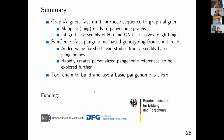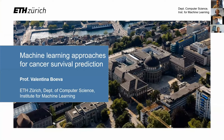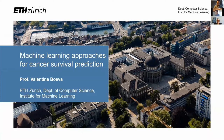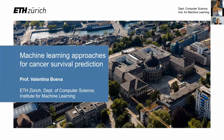The next speaker is Valentina Boeva from ETH Zurich, who will talk about machine learning approaches for cancer survival prediction. She notes her topic is more transcriptomics than pangenomics — comparing different patients rather than genomes — and she'll cover predicting cancer patient survival from expression and other molecular data, aiming for biologically interpretable models.